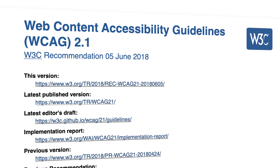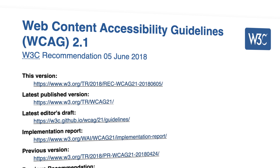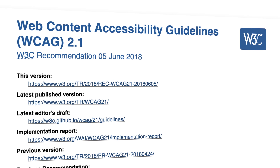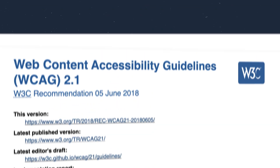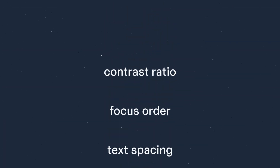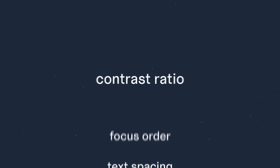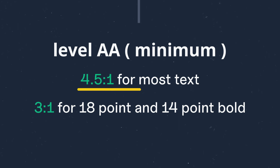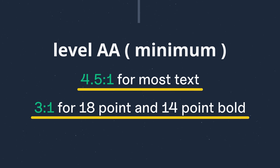Fortunately, web developers can follow the Web Content Accessibility Guidelines to ensure their websites are accessible. These guidelines cover many different topics, one of which is how to use contrast ratio to measure how bright or dark colors appear on screens. The minimum contrast ratio is 4.5 to 1 for most website text, and the minimum contrast ratio for 18 point and 14 point bold text is 3 to 1.